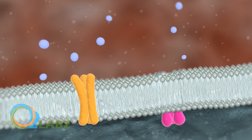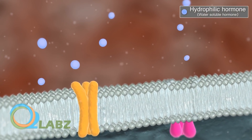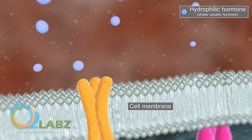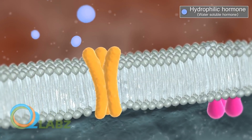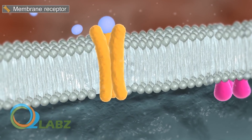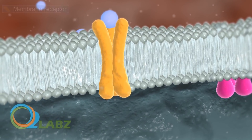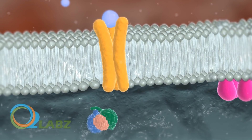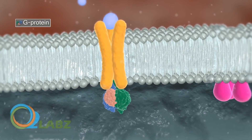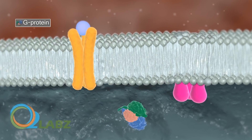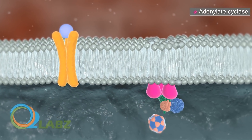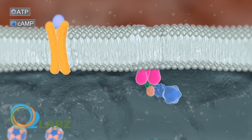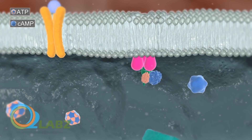In contrast to hydrophobic hormones, hydrophilic hormones cannot pass through the target cell's membrane. These water-soluble hormones must bind to a receptor on the membrane. When a hydrophilic hormone binds to the hormone receptor, a G protein is activated. The activated G protein stimulates the membrane-bound enzyme adenylate cyclase, which converts ATP into a second signal or messenger known as cyclic AMP.